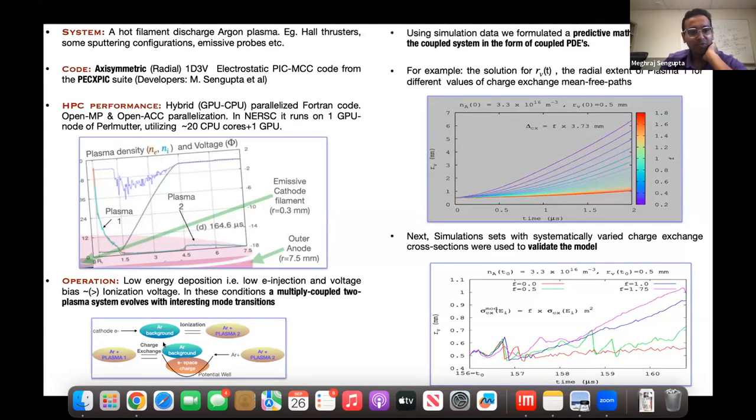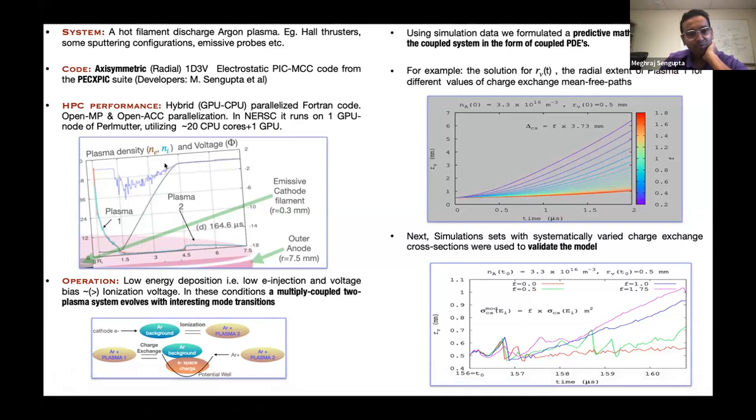A short overview of how the two plasmas form. So you have the cathode electrons emitting, emitted from the cathode, which ionize this argon background and produce this conventional plasma two. And there's a less conventional plasma that forms in this region, which is formed by, like you have argon ions, which are coming from this plasma two, they move downstream. And in this region where there is electron space charge, some of these argon ions, they perform charge exchange collisions with the background. And as a result form low energy ions, and these ions get trapped in the potential well of this space charge. And that forms this another quasi neutral plasma, which is the plasma one.